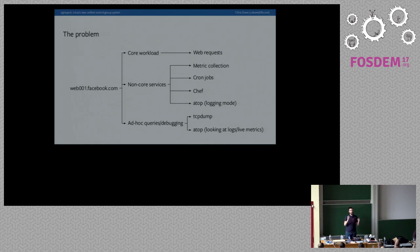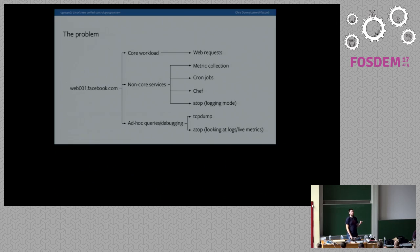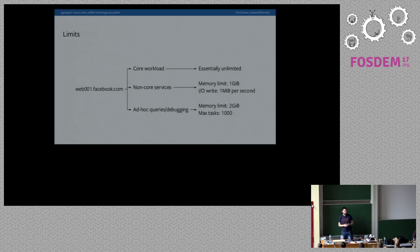Then there's a third class: ad hoc queries and debugging. These are things you don't know you need until an incident is already happening. We want people to be able to dynamically determine the importance of those things as an incident is going on — whether they want it to take precedence over the core workload of the machine or not. This is a very good use case for cgroups.